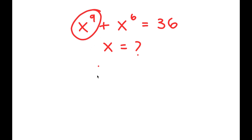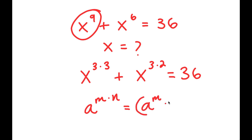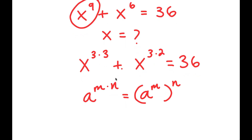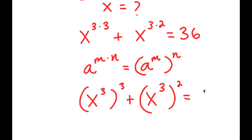I can rewrite x to the power of 9 as x to the power of 3 times 3, and x to the power of 6 as x to the power of 3 times 2. Using the rule that a to the power of m times n equals a to the power of m to the power of n, I get x to the power of 3 to the power of 3, plus x to the power of 3 to the power of 2, equals 36.